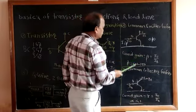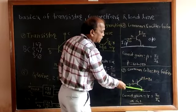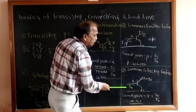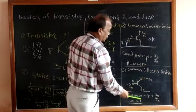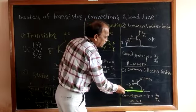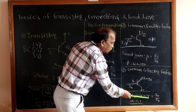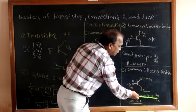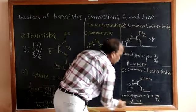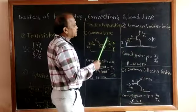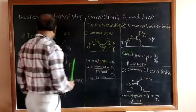Practically, we use common emitter connections every time because its gain is high — it has advantages. The third configuration is common collector configuration. Here the collector is common between the input side and output side, so the input current is IB and the output current is IE. Current gain in common collector configuration is indicated by the letter gamma. Gamma is equal to output current IE divided by input current IB. This gamma value is very small, so practically whenever we are using a transistor amplifier, we mostly use common emitter configuration.